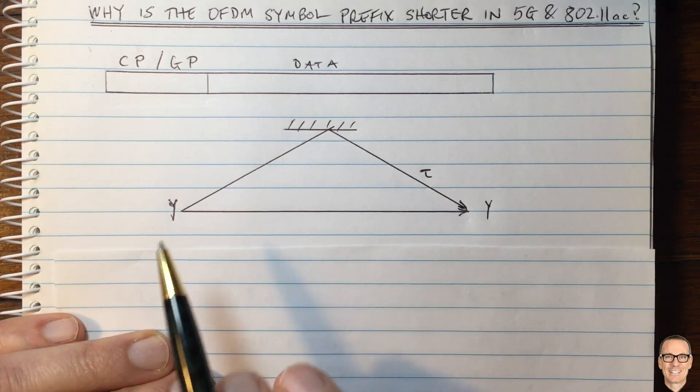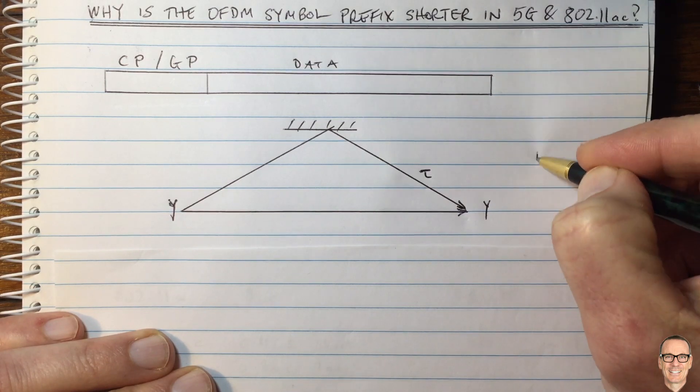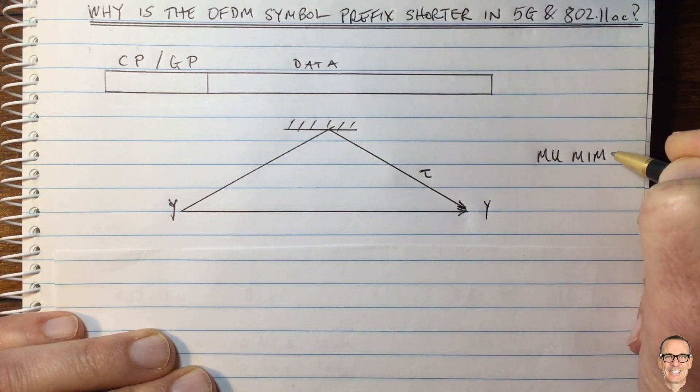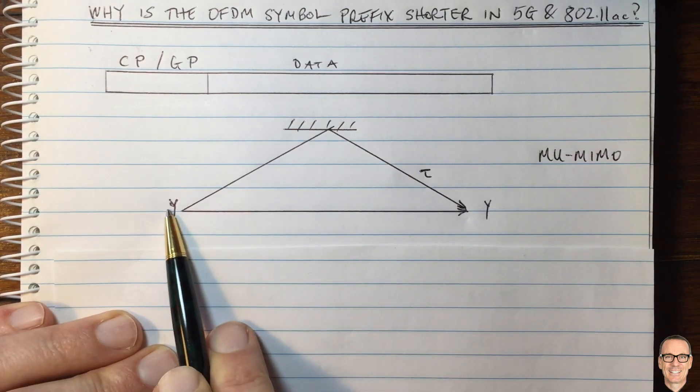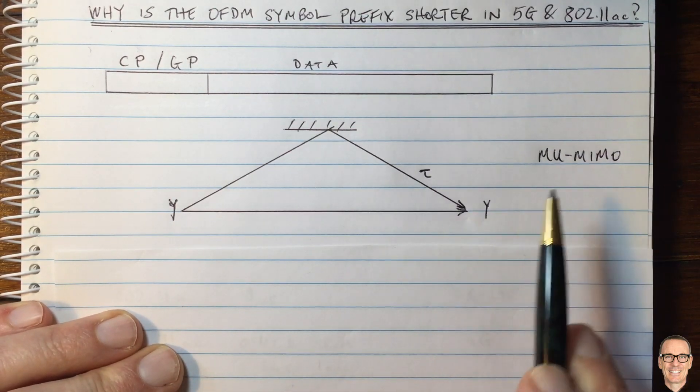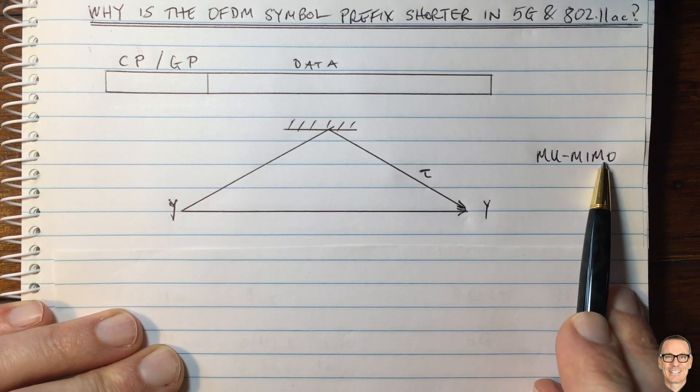Another effect with both systems is that they're using multi-user MIMO. With multi-user MIMO, a separate beam is formed for each user using the multiple antennas at the transmitter, and the same thing happens at the receiver.